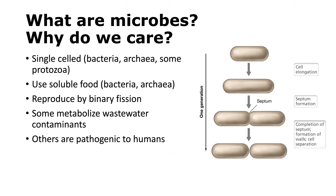What are these microbes and why do we care about them in water and wastewater treatment? They tend to be single-celled — bacteria, archaea, and some protozoa, which are eukaryotes. They tend to use soluble food sources and reproduce by binary fission. Some can metabolize contaminants in wastewater, and others are pathogenic to humans.